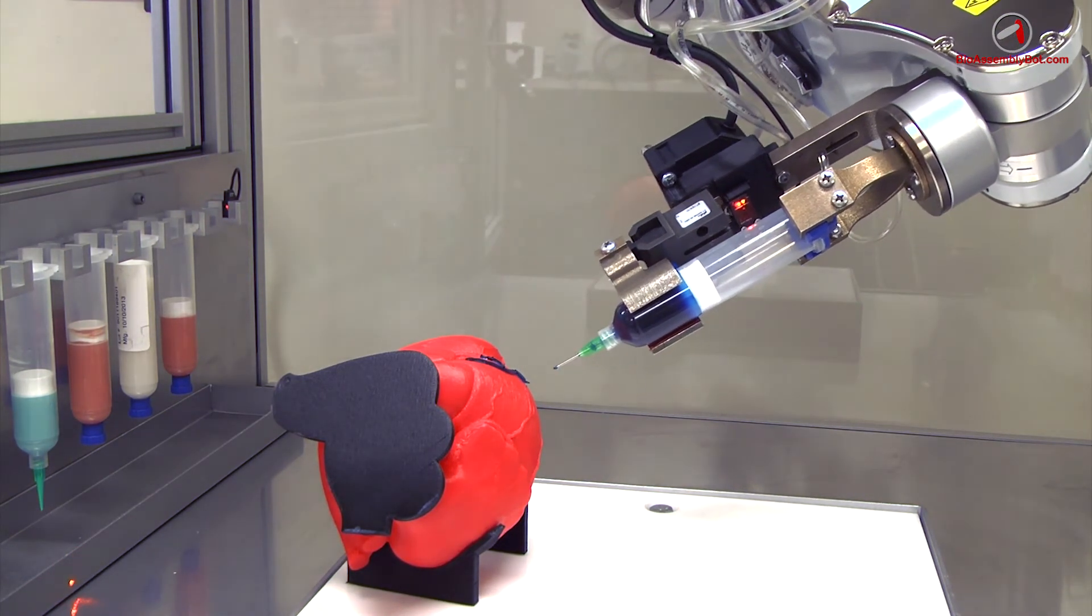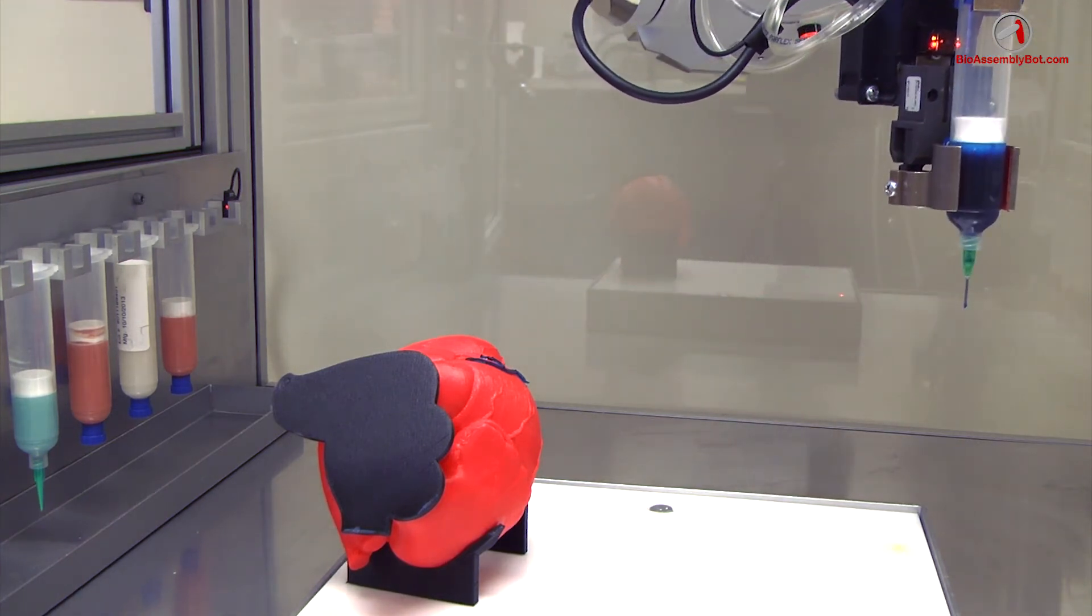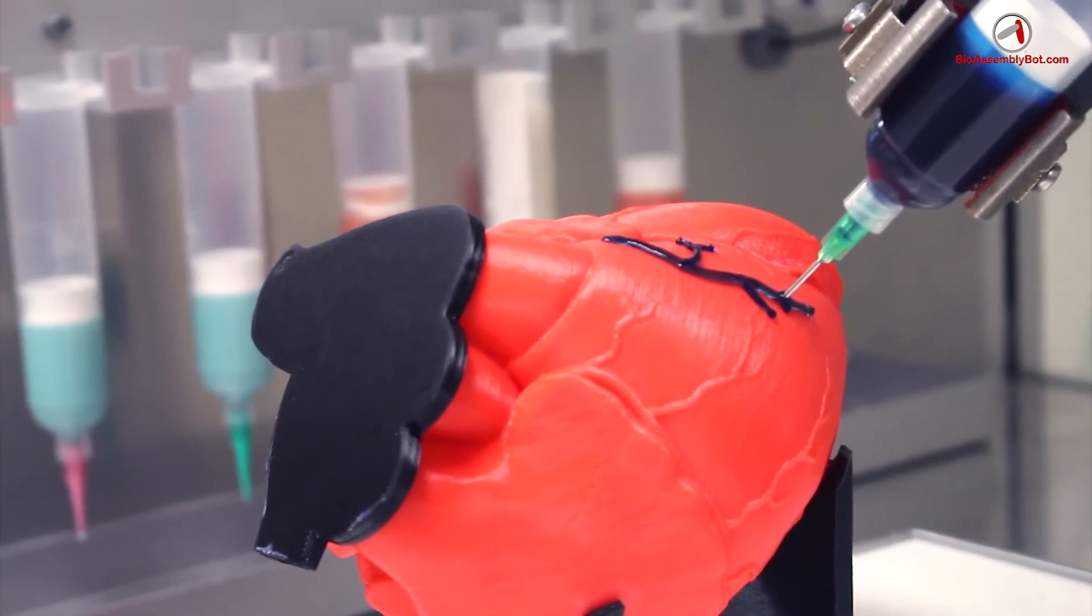Notice the robot here is following contours even all the way down to the lateral side of the heart model.